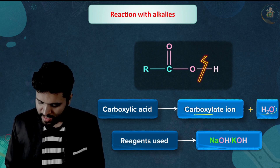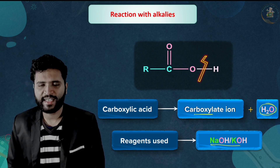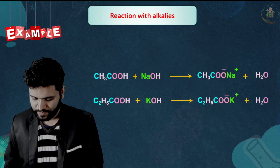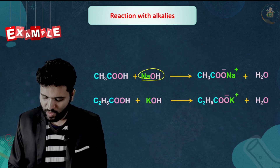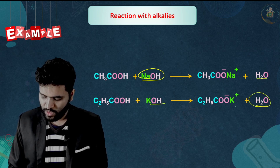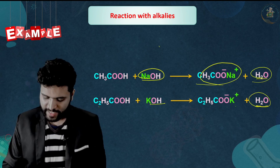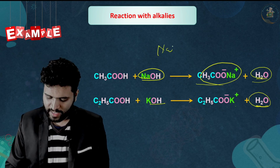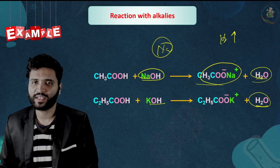Reaction with alkali: carboxylic acid reacts with an alkali such as KOH. For example, CH3COOH + KOH → CH3COOK + H2O. The active metals and alkalis both give a salt of carboxylic acid; with alkali, water is produced instead of hydrogen gas.